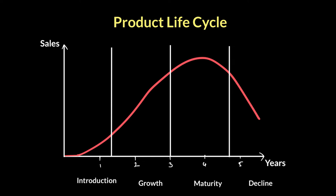What you see here is a graph. On the y-axis, you'll see the sales numbers, and on the x-axis, you have the number of years. All product life cycles, whatever the product is, whichever industry you're operating in, will always have this shape for their product lifecycle.